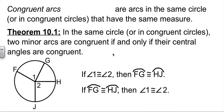And our very first theorem of the chapter, yes that's right, proofs are going to rear their ugly heads here in a little bit. Not today, but soon. If we have the same circle or if we have congruent circles, two minor arcs are congruent if and only if their central angles are congruent. What this is telling me is if I know angle one is equal to angle two, then I know arc FG is going to be congruent to arc HJ. And vice versa. If I know the two arcs are equal, then I know the two angles are equal.